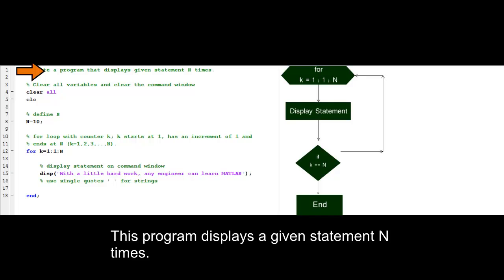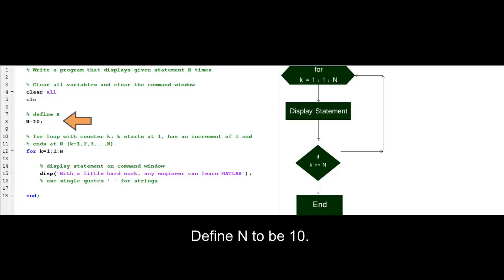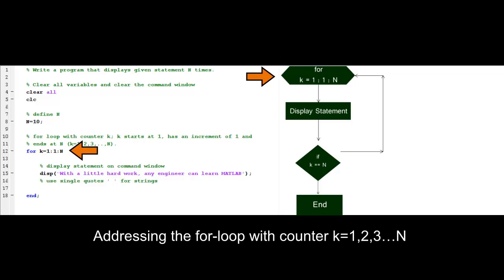This program displays a given statement n times. Define n to be 10. Addressing the for loop with counter k equals 1, 2, 3 to n.